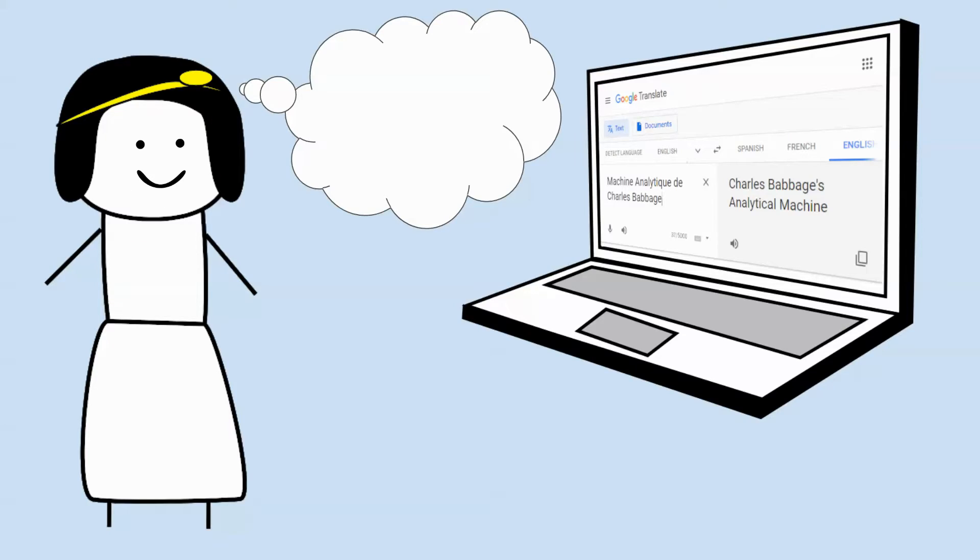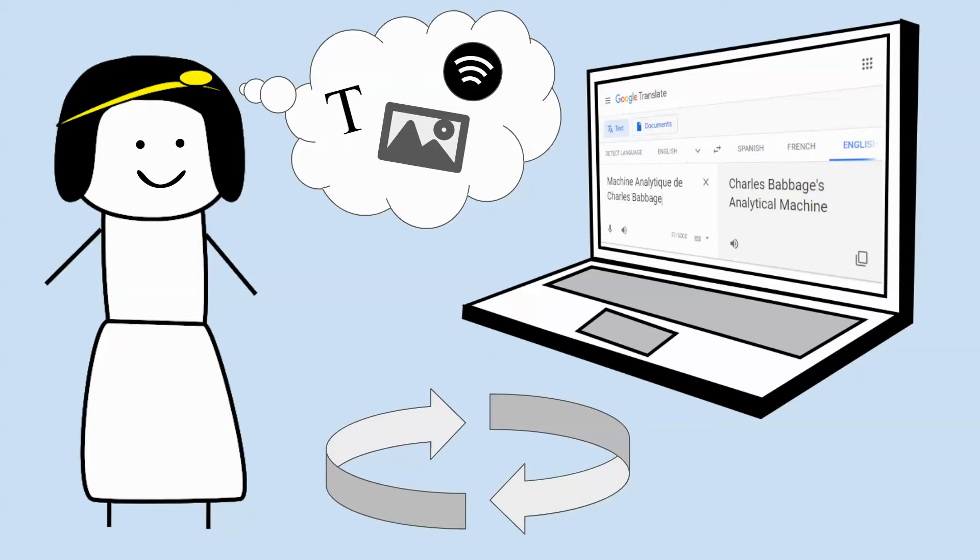While translating, Ada also added her thoughts as notes at the end of the article. This included her ideas on how the computer could process text, images and music, and also the idea of looping, which programmers call iteration, which is a fundamental concept in computer programming.